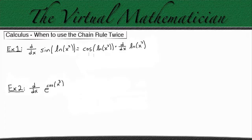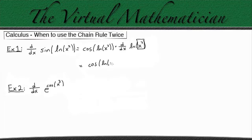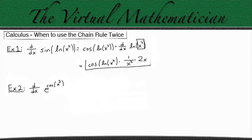This cosine of ln(x²) is going to stay the same. When we take the derivative of ln(x²), we have to use the chain rule again, multiplying by the derivative of what's on the inside of the natural log. The derivative of the natural log is always 1 over whatever is on the inside, times the derivative of x squared, which is 2x. That's the answer for example one, using the chain rule twice.